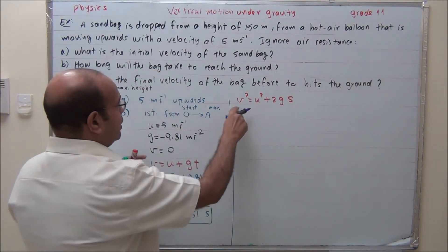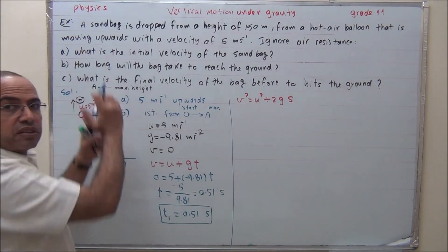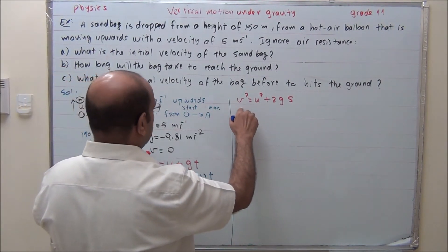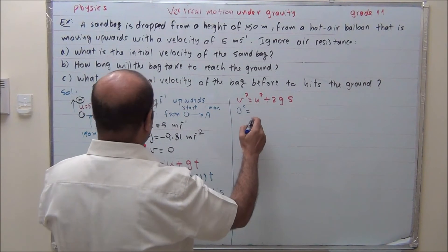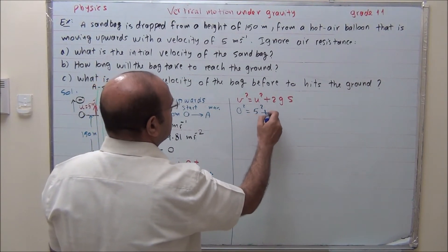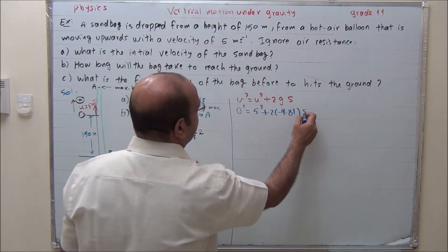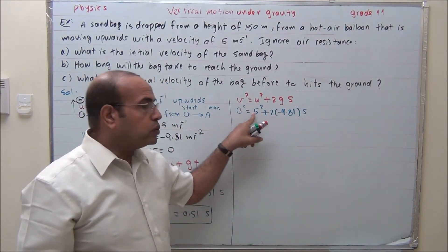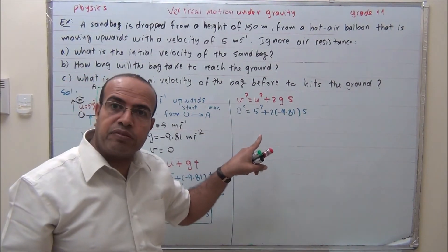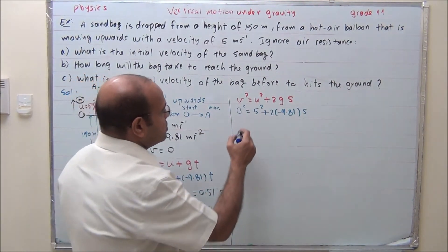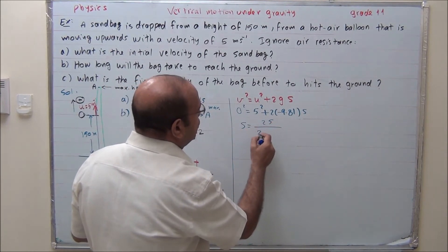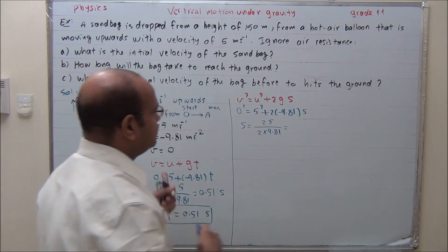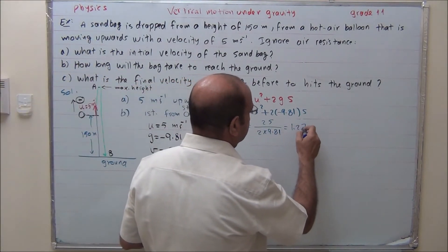For the interval O to A (start to maximum), the final velocity V is zero. So: 0 squared equals 5 squared plus 2 times (negative 9.81) times S. This gives 0 equals 25 minus 19.62S. Moving 25 to the other side: negative 25 equals negative 19.62S. The negatives cancel, so S equals 25 divided by (2 times 9.81), which gives S equals 1.27 meters.